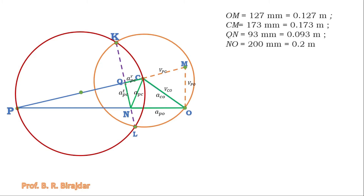If they ask for radial acceleration, take the Q to C distance. If they ask for the final acceleration of P with respect to C, take C to N. Here we have taken the four values needed to calculate what the problem asks.